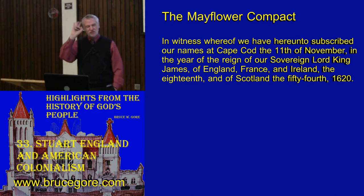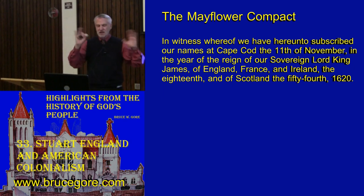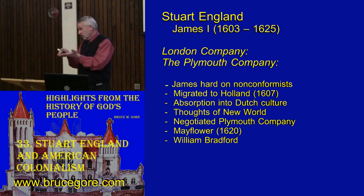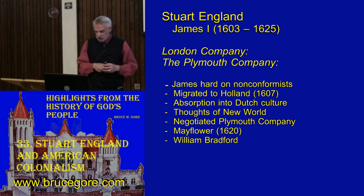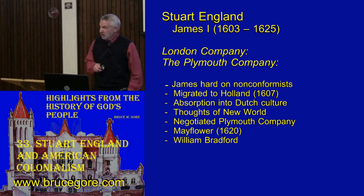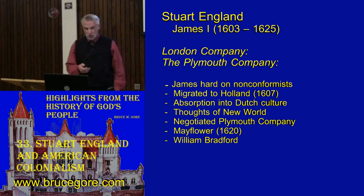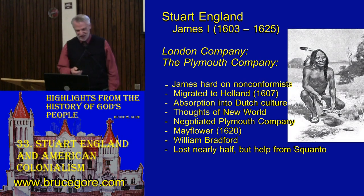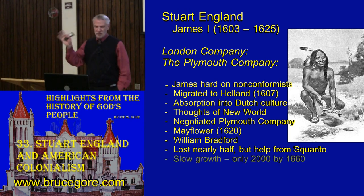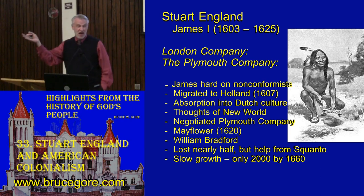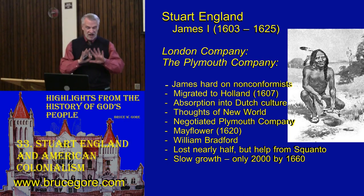The Mayflower Compact is distinguished for its robust Christian affirmations, its clear and evident submission to the throne — they were not trying to appear the least bit rebellious — and yet for the designs they had to establish what would amount to a Christian community. The Mayflower group lands and establishes the Plymouth Colony. They lost about half of their population over that first winter, but were helped out by a wonderful local Native American, Squanto. The Plymouth Colony grew over 40 years from about 50, after they lost about half their population, up to about 2,000 by the year 1660.